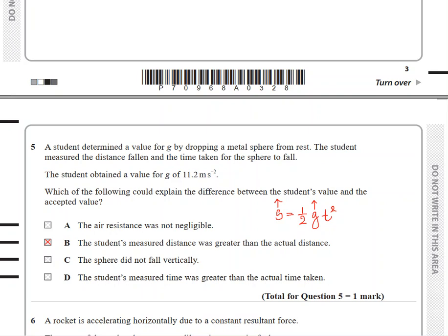If there was an option in the answers that the measured time was smaller, a smaller time would also result in a greater g. But for this question, option D says time was greater—no, time has to be smaller for the value of g to be greater.